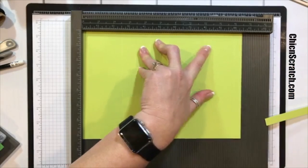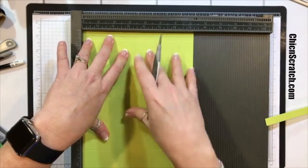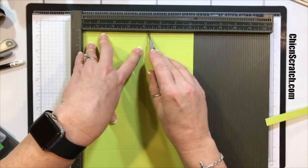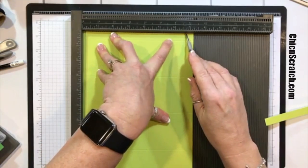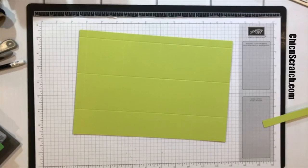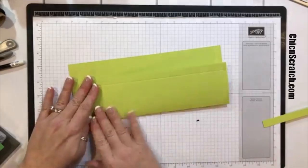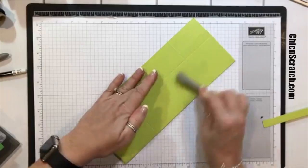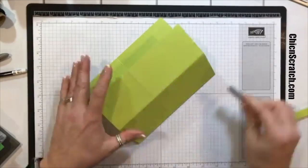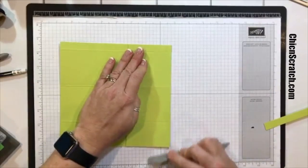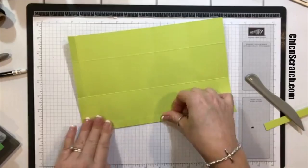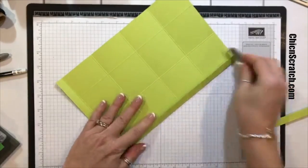Then we're going to turn it on the 7 and a quarter inch side, which I call the portrait side, and we're going to score it at 1 and three quarters, 4 and a quarter, and 6 and three quarters. There we go, that looks good, perfect.